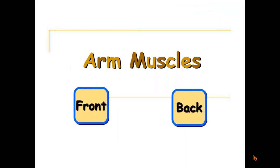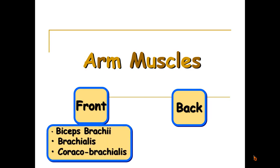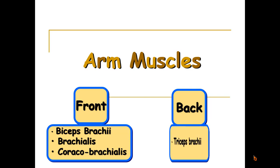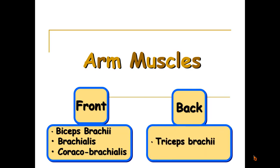The arm muscles are divided into two groups: at the front of the arm, the flexor muscles, and at the back of the arm, the extensor muscles. The front muscles include the biceps brachii, the brachialis, and the coracobrachialis. At the back we have only one muscle with three heads, which is called the triceps brachii.